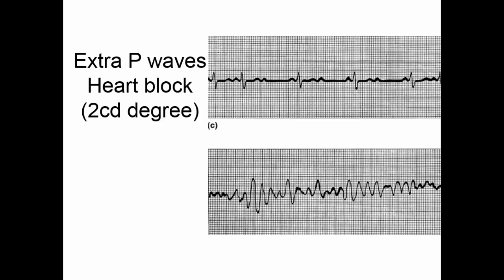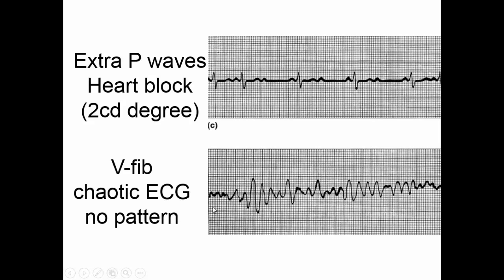On this one we have P-QRS-T, then a P with nothing, then P-QRS-T, then a P with nothing. This is a second-degree heart block — the information from the sinoatrial node is not getting through to the ventricles, so we don't see a depolarization event of the ventricles on every cycle. And this last one doesn't look good at all — this is V-fib, ventricular fibrillation. Here you've got a chaotic EKG pattern, meaning the heart is not beating functionally.